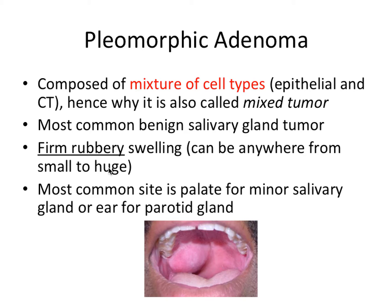It's a firm rubbery swelling, which can be anywhere from small to huge. Most common site is the palate for minor salivary glands or near the ear for the parotid gland. Firm rubbery swelling is pretty relevant — I've seen practice questions that focus on that fact for differentiating it from another type of swelling. And most common site is the palate for minor salivary glands, which is true for most of these salivary gland tumors we're going to talk about.